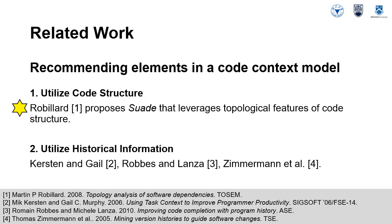A number of related works focused on recommendation of code elements in a code context model. The recommendation can utilize information about the structure of the code. For example, Suede leverages topological features of the code structure to suggest a fuzzy set of potential code elements of interest for a code context model given elements already identified as interesting.